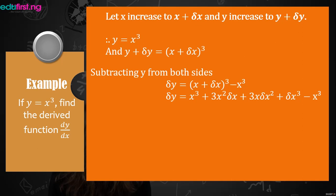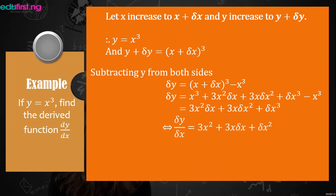Expanding (x plus delta x) cubed gives x cubed plus 3x squared·delta x plus 3x·(delta x) squared plus (delta x) cubed, minus x cubed. Dividing through by delta x, we get delta y over delta x equals 3x squared plus 3x·delta x plus (delta x) squared. When we limit delta x to 0, the terms 3x·delta x and (delta x) squared cancel out, giving dy/dx equals 3x squared.